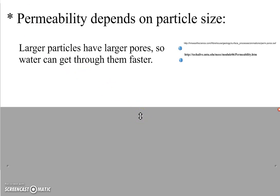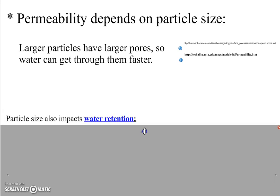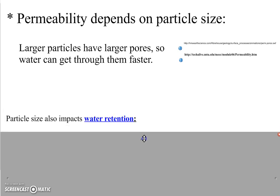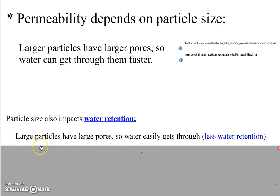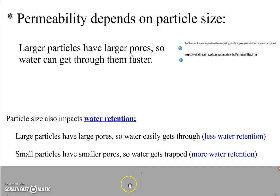The other factor we're looking at in this video is water retention. Basically, when water goes through particles, not all of it gets out — some of it gets retained or trapped in the pores. If there are large particles with large pores, the water is going to easily get through, so you won't have a lot of water retained in those pores. With smaller particles, there are smaller pores, so the water is more easily trapped and we get more water retention.